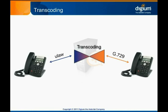It's often preferable to avoid transcoding, but there are several circumstances where there's no choice. To see a matrix of transcoding delays for each of the codec combinations your Asterisk system supports, run Core Show Translation on the Asterisk console.